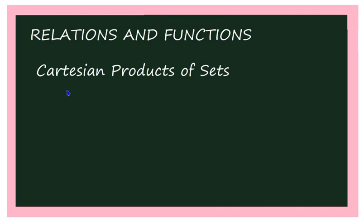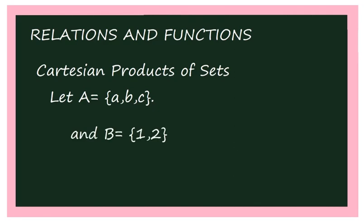The first concept is the Cartesian product of sets. Let us take two sets in the beginning. I will take set A equal to {a, b, c} and set B equal to {1, 2}. In B there are two elements, and in A there are three elements.